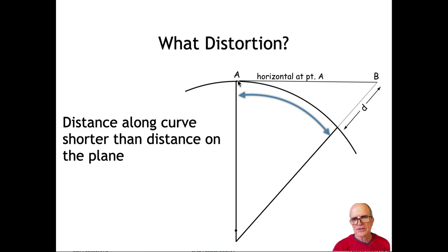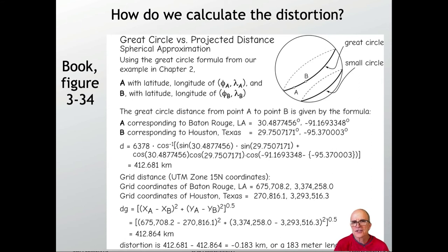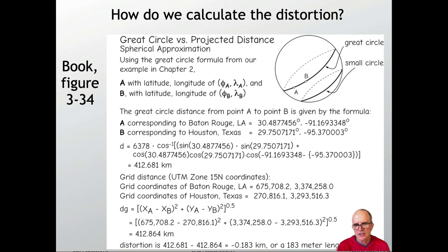What is the distortion? We have a horizontal line in our projected system and a curved line on the surface of the earth. If we survey across the surface, that curved distance is going to be greater than the projected distance, and we have to determine how much extra we're adding. We can calculate the distortion for any projection using the great circle distance calculation and the Cartesian projected coordinate distance. The Cartesian distance is the square root of (x1 − x2)² + (y1 − y2)².